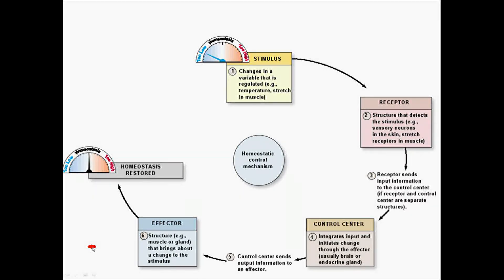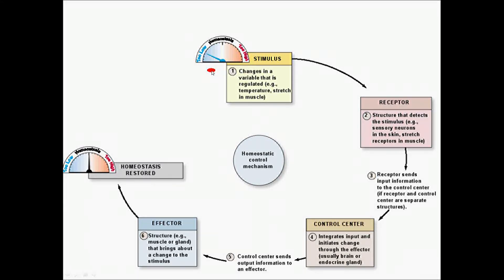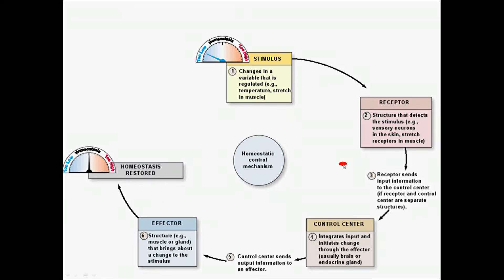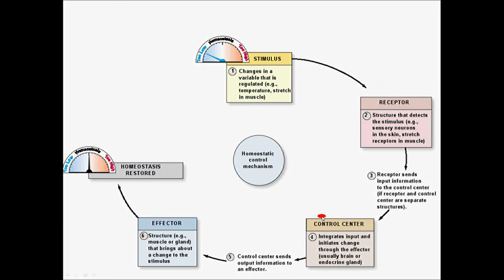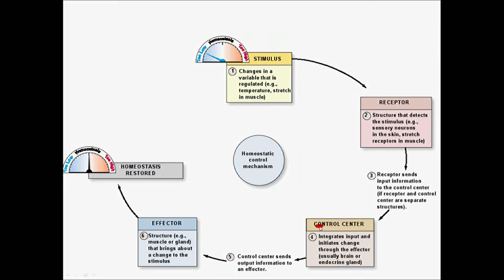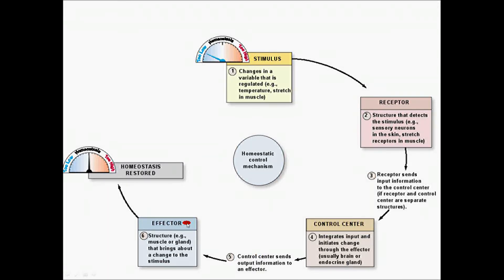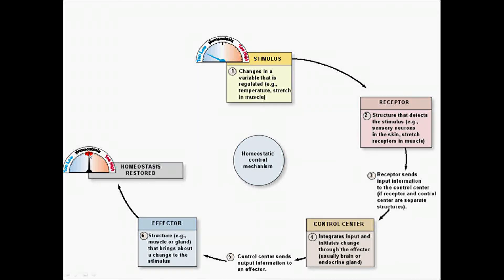Here is a pictorial example showing the different steps. The stimulus in this example is that something is too low. The receptors detect it and send the information to the control center. The control center integrates that input and sends a signal to the effector. The effector makes a change, and homeostasis is then restored — it is back to normal.